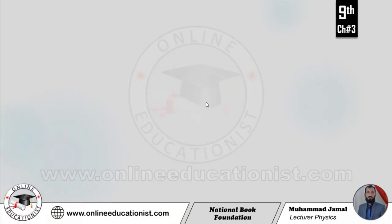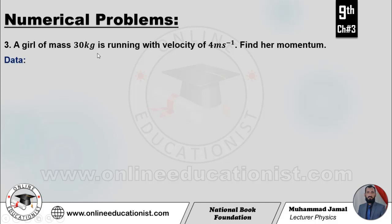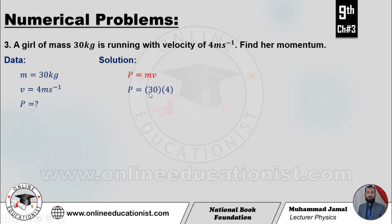Problem number 3. Ek girl of mass 30 kg is running with velocity of 4 meter per second. Uska momentum kya hoga? Data mein girl ka mass given hai aur velocity given hai, momentum P calculate karna hai. Toh hum jaante hain ke P equal hota hai mv ke, toh values put karenge: mass 30, velocity 4. Toh momentum aa jaata hai 120 newton second ke equal.